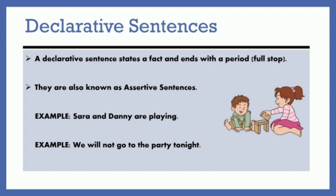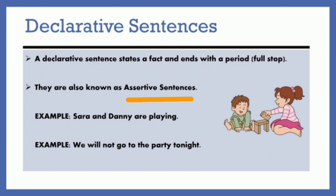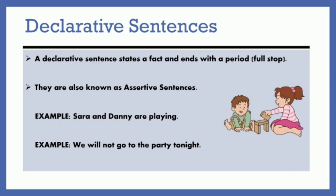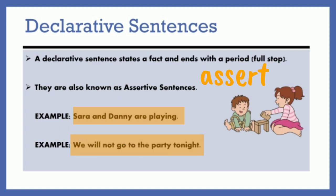Let's now see what declarative sentences are. A declarative sentence, just as the name says, declares something — it declares a fact, and it ends with a full stop or a period. They are also known as assertive sentences because they assert a fact. For example: 'Sarah and Danny are playing.' 'We will not go to the party tonight.' These are sentences that are stating a fact.